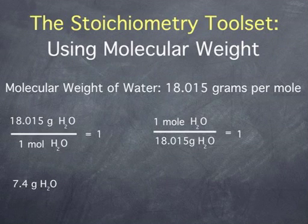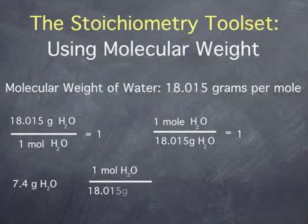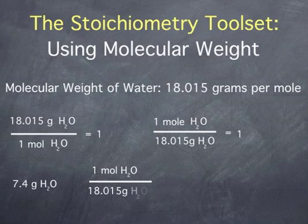To do this, we write down 7.4 grams water and multiply by one mole of water per 18.015 grams of water. From above, this ratio is equal to one, so it converts the units without changing the amount of water.